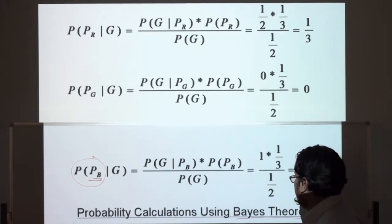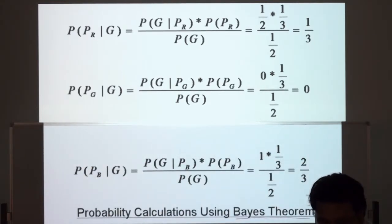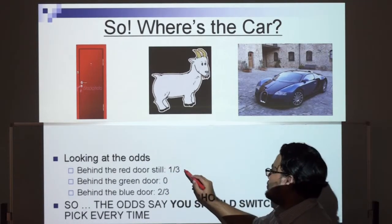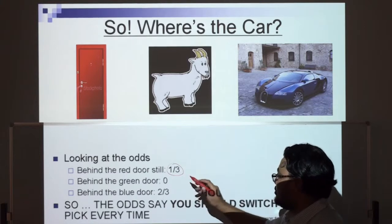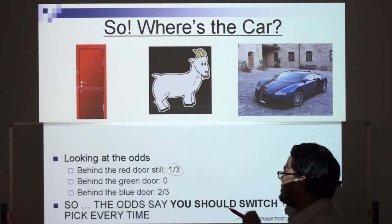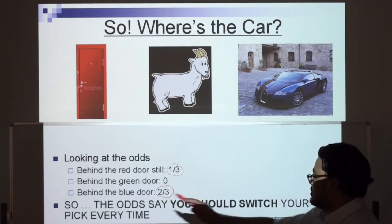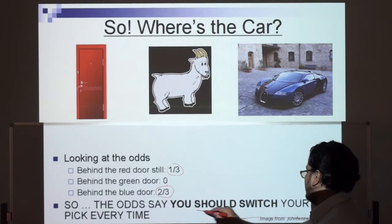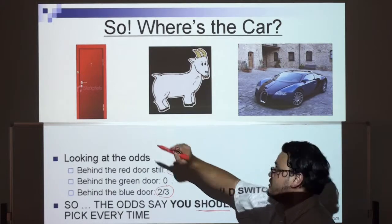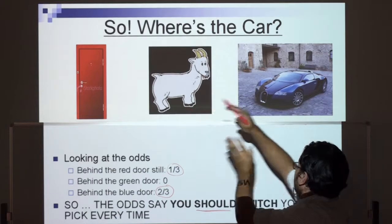Looking at where the car is: the odds behind the red door still remain one-third; behind the green door it's impossible because he opened it; behind the blue door your chances are better — two-thirds. So the odds say that you should switch your pick every time. If the host opens the green door and asks whether you want to stay with red or go with blue, you should switch. Choose blue.